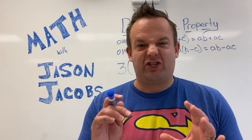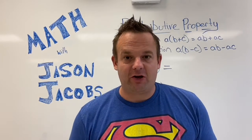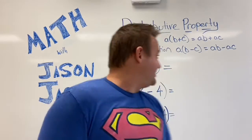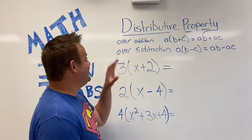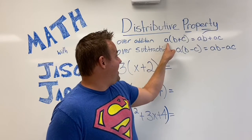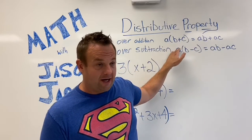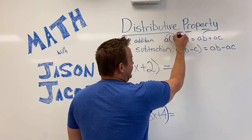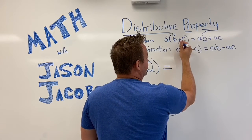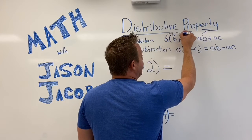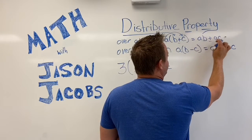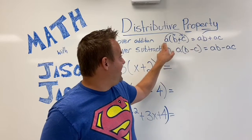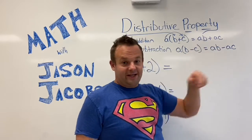Distributive Property. We're going to learn all about the Distributive Property over Addition and the Distributive Property over Subtraction. My name is Jason Jacobs; it's an honor and pleasure to teach you all about the Distributive Property. The Distributive Property over Addition says: if you have A times the quantity B plus C — when a number is right next to parentheses, that means you multiply — it becomes A times B plus A times C. So the A distributes to the B and the A distributes to the C: A times B plus A times C.